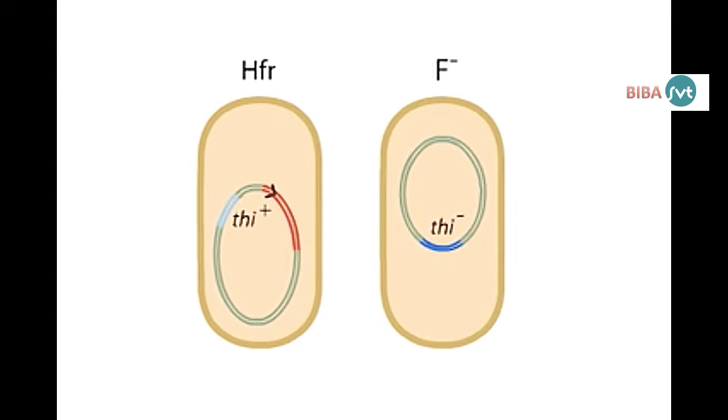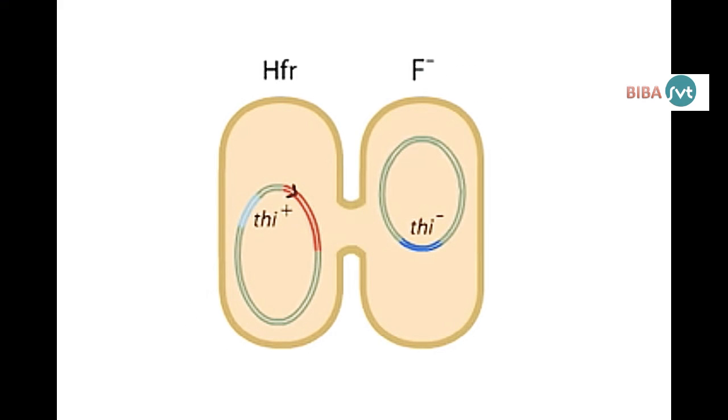When an HFR bacteria mates with an F- recipient, one DNA strand is cut at the F origin. The free 5' end moves through the transfer pore while the chromosome replicates. The donor strand is replicated as it enters the recipient.